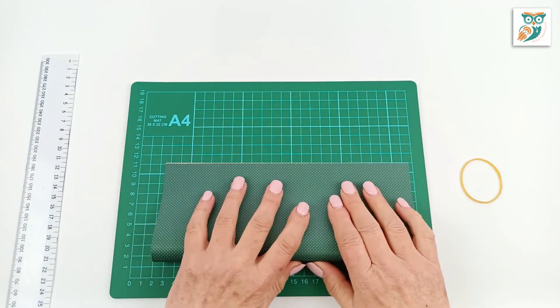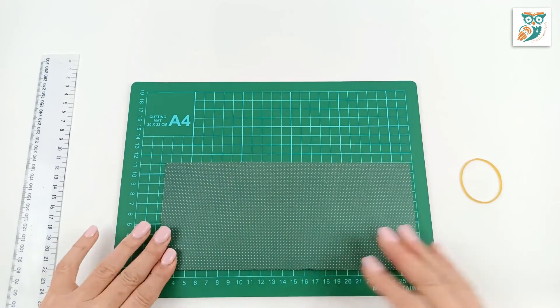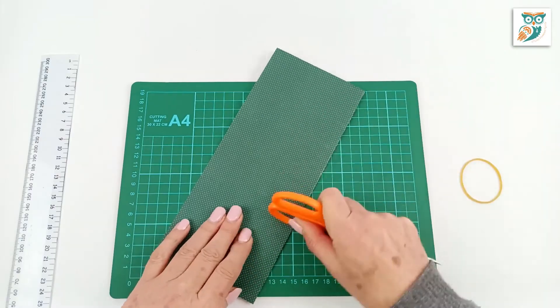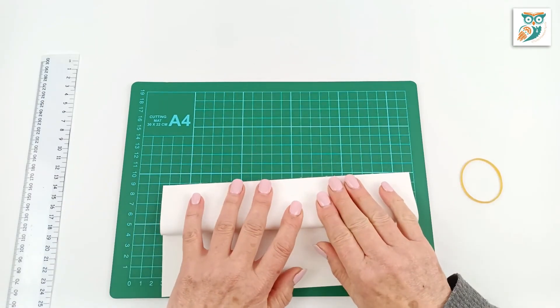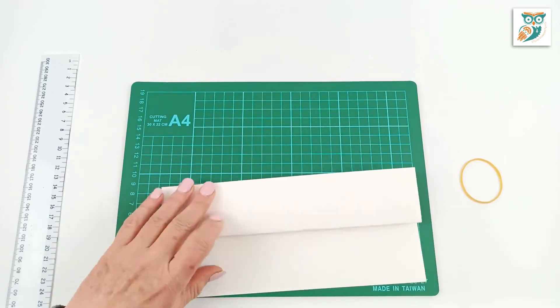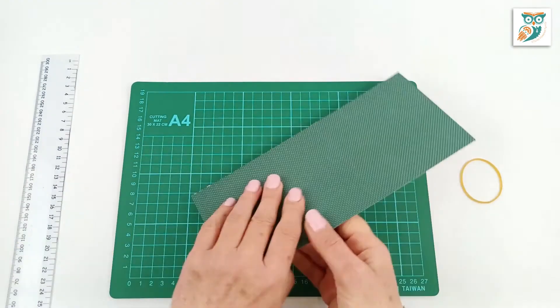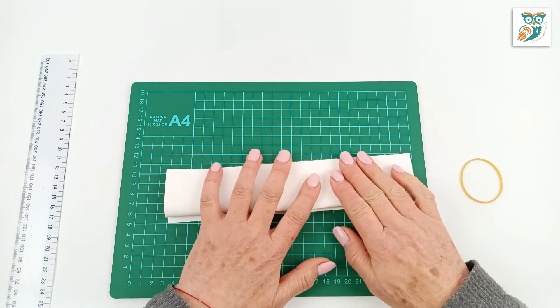And now we're going to fold it in half. Once again, we want nice sharp edges there. Now turn it and fold again to make a quarter. And then fold it over again and make another quarter fold.